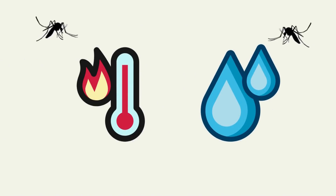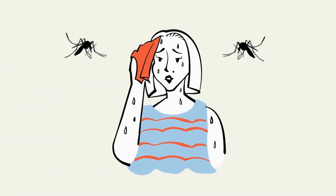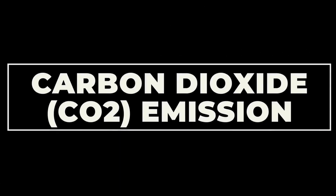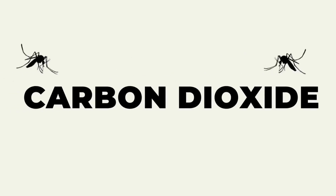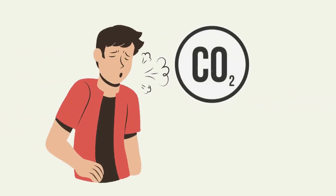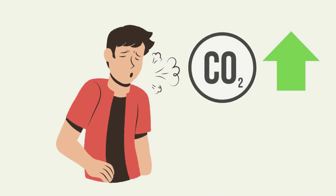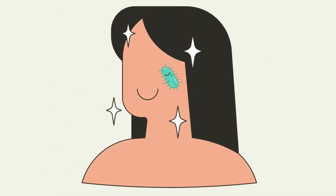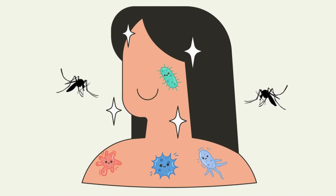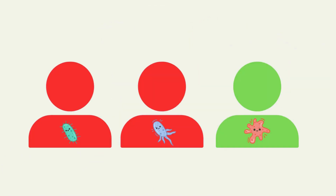Body Heat and Sweat: Mosquitoes are attracted to the heat and moisture produced by warm-blooded creatures, including humans and animals. Individuals who generate more body heat or sweat might be more attractive to mosquitoes. Carbon Dioxide (CO2) Emission: Mosquitoes are highly sensitive to carbon dioxide, which is exhaled by humans and animals during respiration. They can detect carbon dioxide from a distance of up to 50 meters. People who produce more carbon dioxide or exhale it at higher rates may be more attractive to mosquitoes. Skin Microbiota: The bacteria that naturally inhabit our skin can influence mosquito attraction, as different types of bacteria emit distinct odors.